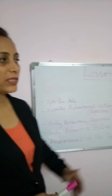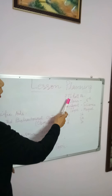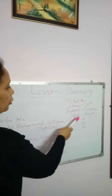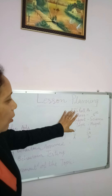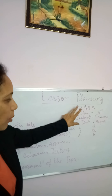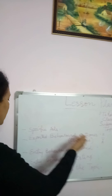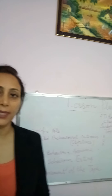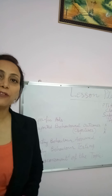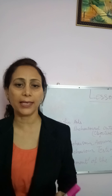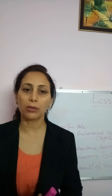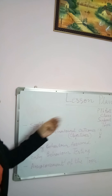For a macro lesson plan, first of all you have to write your roll number, the class which you are going to teach, your subject, and the topic on the right side of your copy or plan. Then come the specific aids, which are very particular to that topic. For example, for magnetism or magnet, the specific aids you need are: magnet, magnetic needle, iron pins, pencil box, coin, etc.